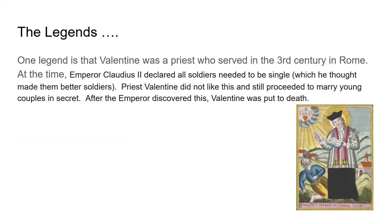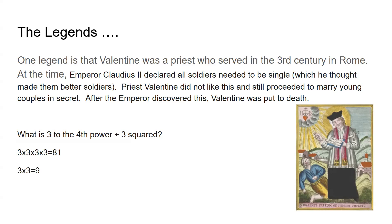In the spirit of the third century, let's do some math: what is three to the fourth power divided by three squared? Three to the fourth is 3 × 3 × 3 × 3 = 81. Three squared is 3 × 3 = 9. So 81 divided by 9 equals 9. And there's a picture of the priest Valentine shown here.